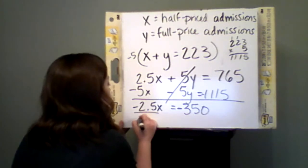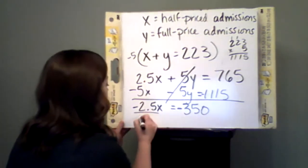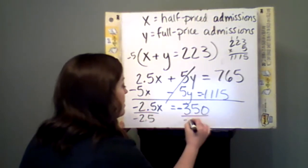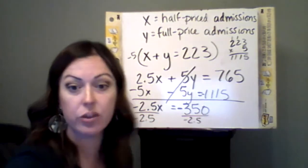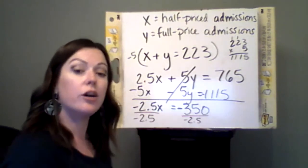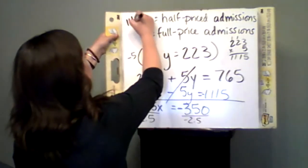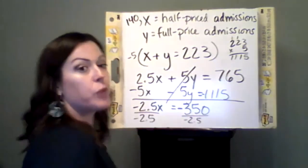Now I have to divide. If $350 came from the half-priced, how many $2.50s do I have in that? So I take 350, divide it by 2.5, and I get 140. So I have 140 half-priced admissions.